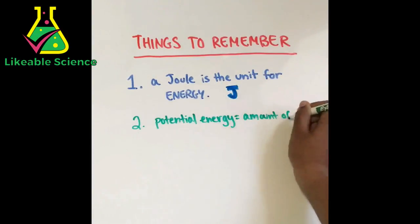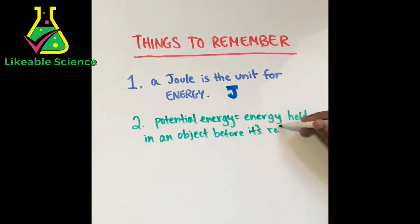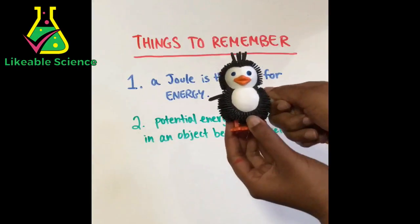Number two, potential energy is the energy held in an object before it is about to do work. For example, if you crank the handle of a wind-up toy to power it up, the toy is storing energy.